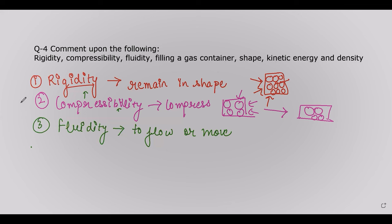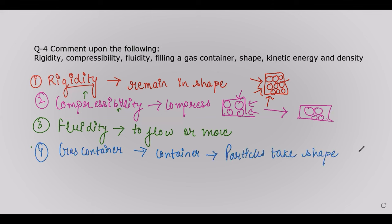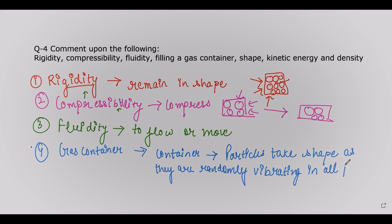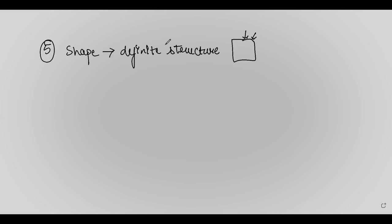Filling a gas container: when gas is filled inside a container or cylinder, the particles take the shape of the container because they are randomly vibrating and moving in all possible directions. This makes it easy to fill up the container, as the particles vibrate and spread in all directions. Shape refers to a definite structure of an object which has a particular boundary, indicating it has a fixed shape.